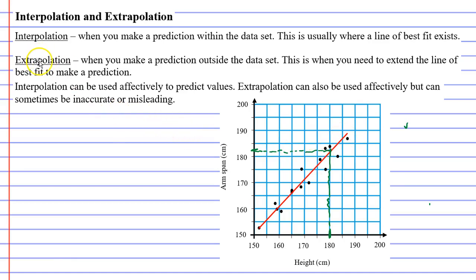When we go to extrapolation, an example of this might be, let's say someone has a height of 200 centimeters, and we want to predict their arm span. You'll notice as we move up, there's no line of best fit here, and we're outside the data set, we're beyond where all these points are.